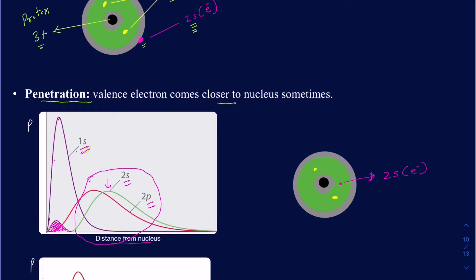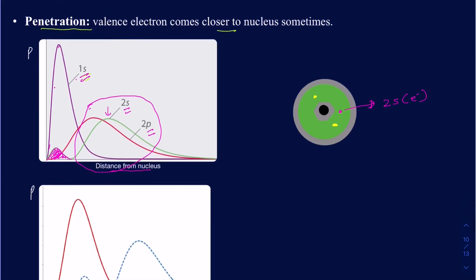Anytime an electron can go closer to the nucleus, we call that penetration, and penetration depends on what type of subshell or orbital you are in. The order of penetration power is: 1s penetrates the most, then 2s, then 2p, then 3s, then 3p, then 4s, then 3d, and so on — just like the order you fill in electronic configurations. The further left in that order, the greater the penetration power.